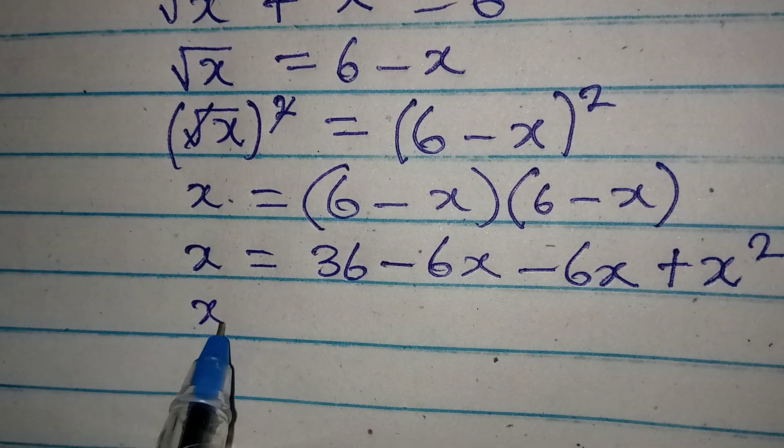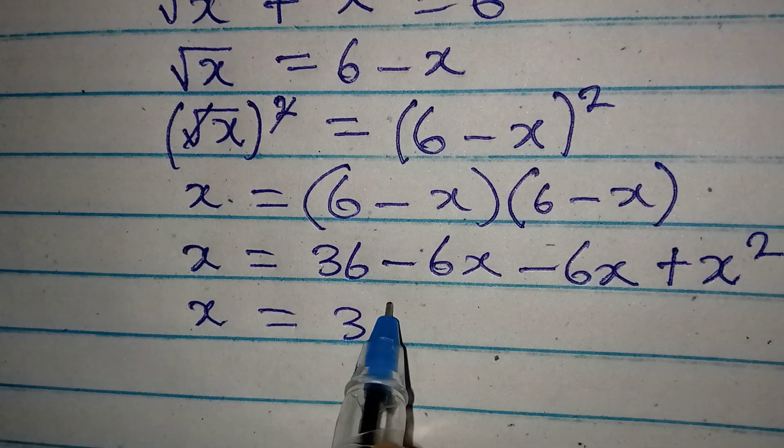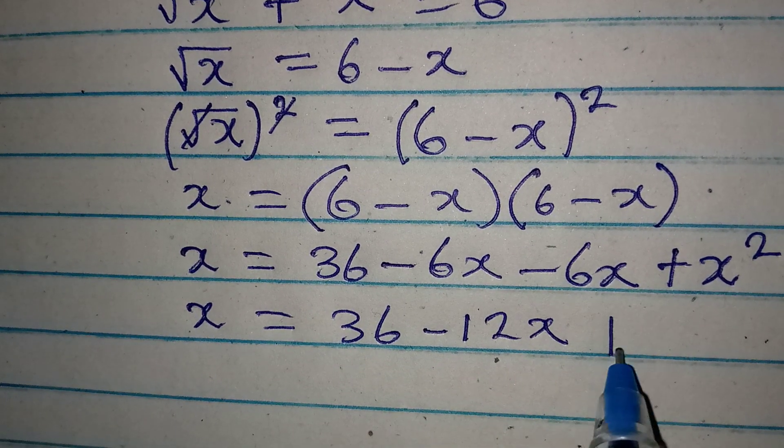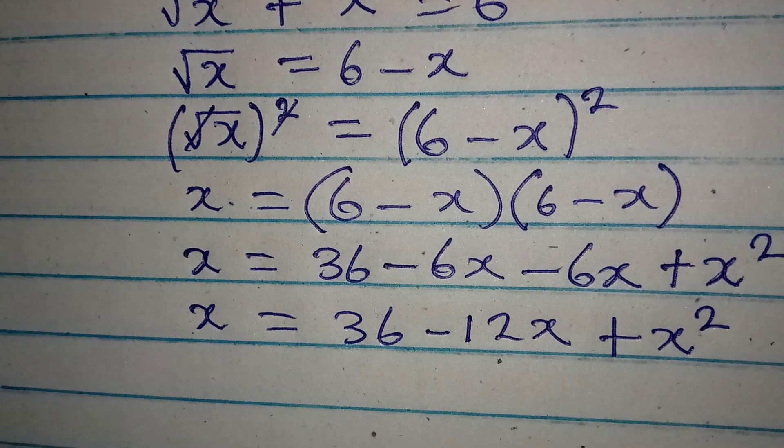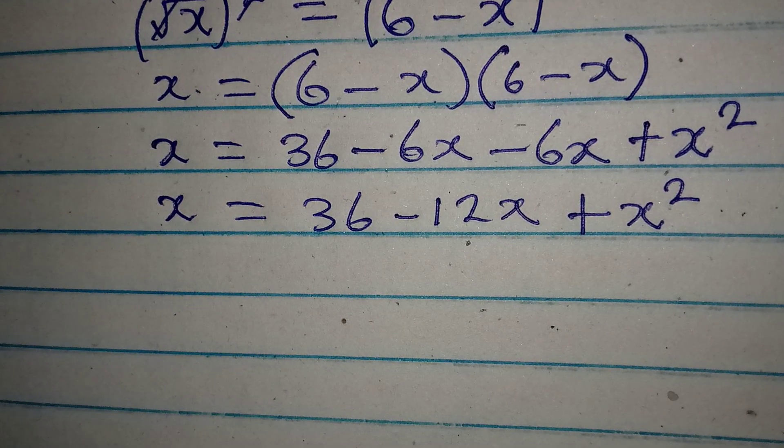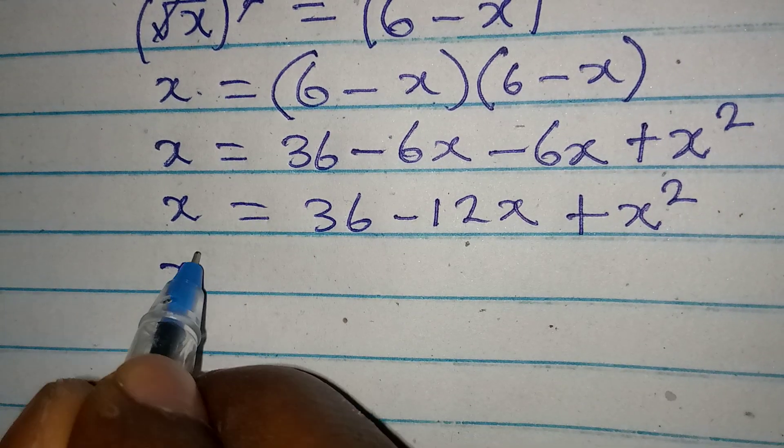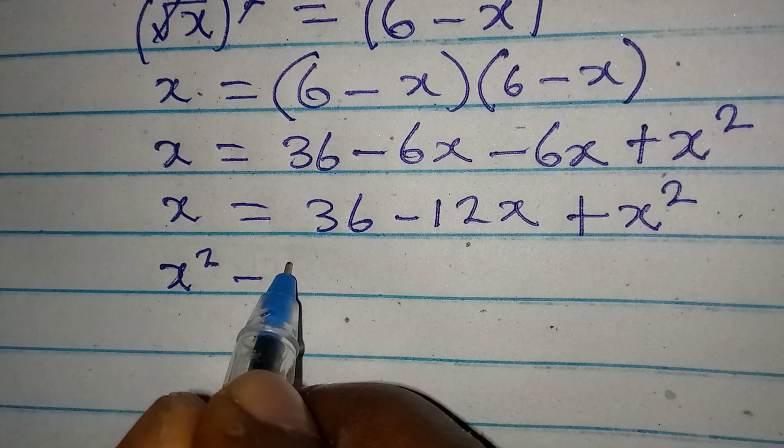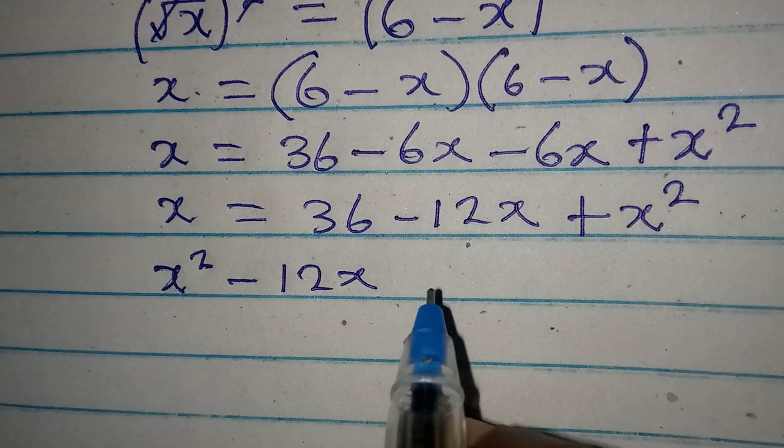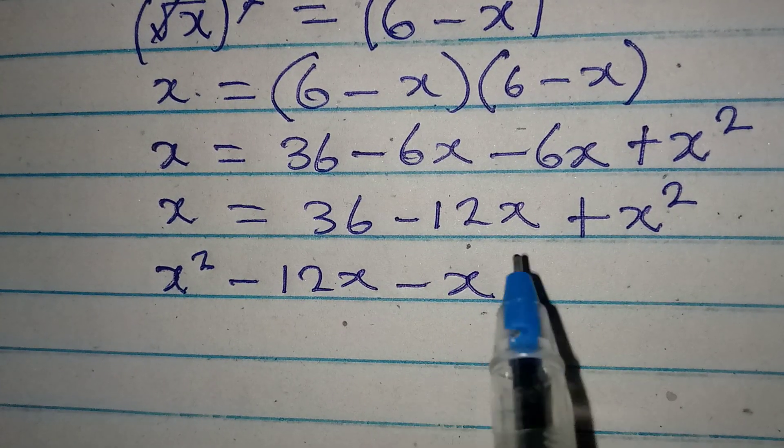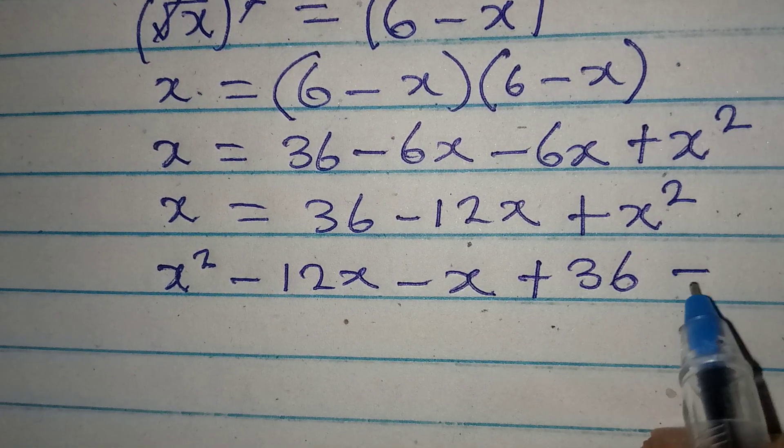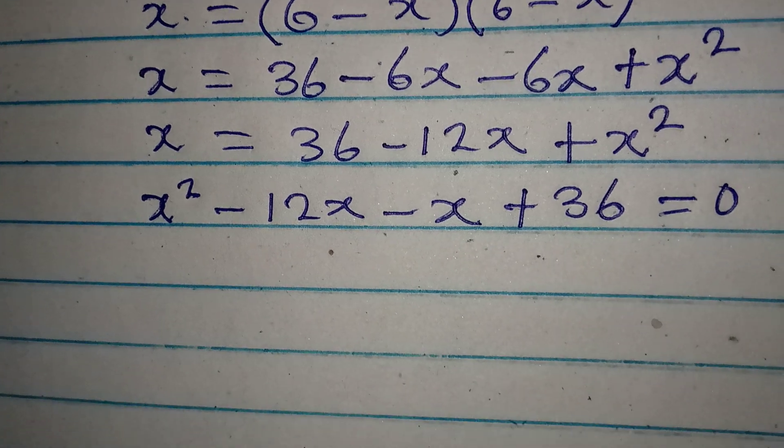X equals 36 minus 12x plus x squared. Now we can write this in a better way, so we have x squared minus 12x. This is coming to meet with the other so it becomes negative x, and plus 36 is still there, so this is now equal to 0.